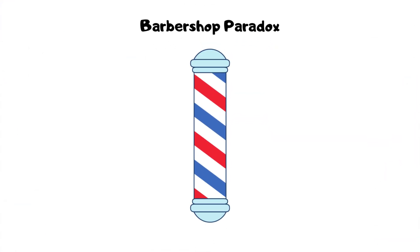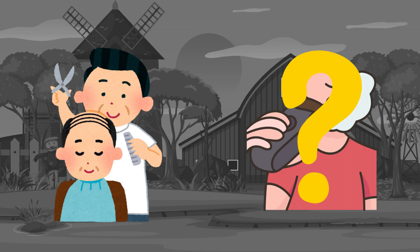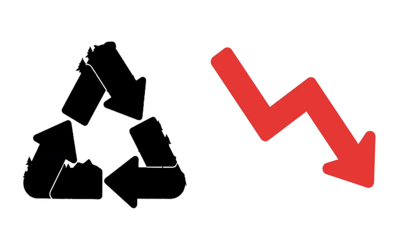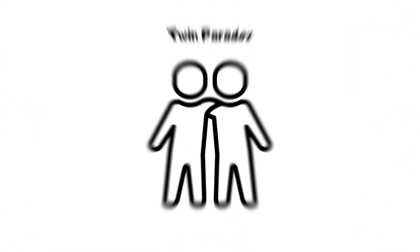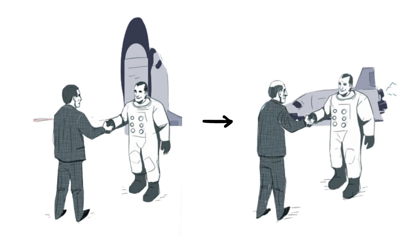Barbershop paradox. The barber only shaves those who do not shave themselves. But does he shave himself? Paradox of enrichment. Enriching an ecosystem can sometimes cause the system to collapse. Twin paradox. A twin traveling at close to the speed of light ages more slowly than the twin who remains on Earth.